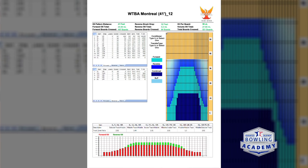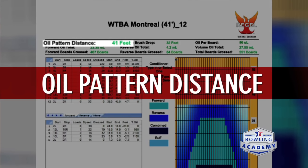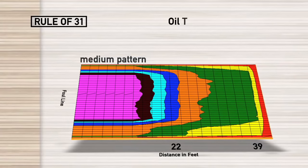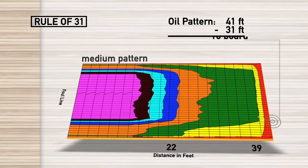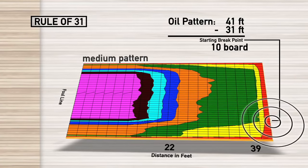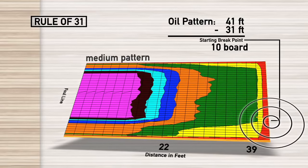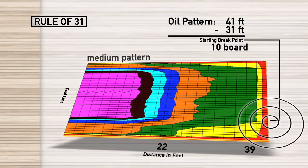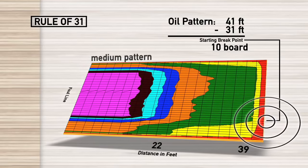Three of the main things you want to be looking at: one is your oil pattern distance, because one good general rule of thumb is taking the pattern distance and subtracting 31. That gives you an idea about what board down the lane you want your ball to be at as it's exiting the oil pattern. There are going to be some other factors that determine whether the best part of the lane is a little bit farther left or a little farther right of that.